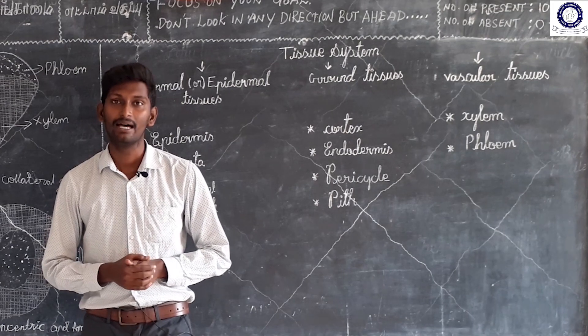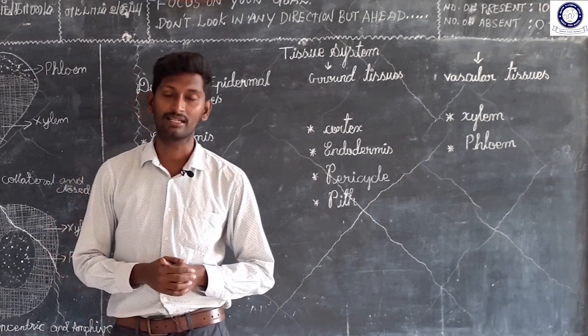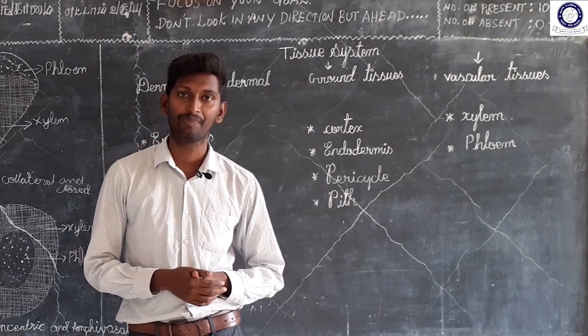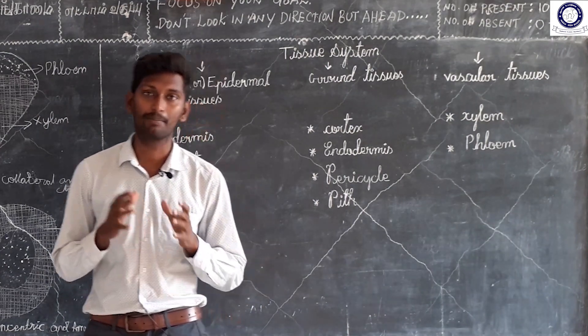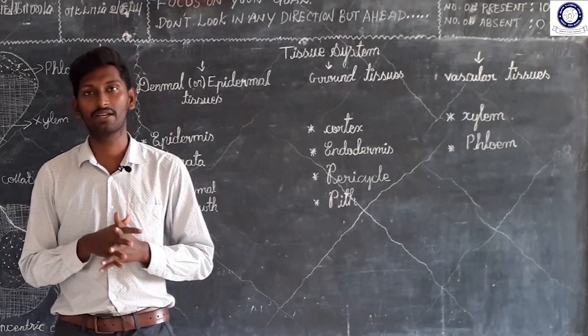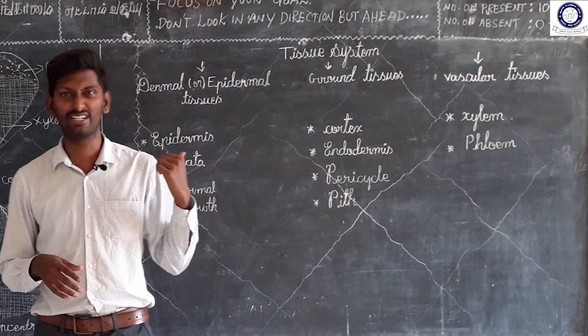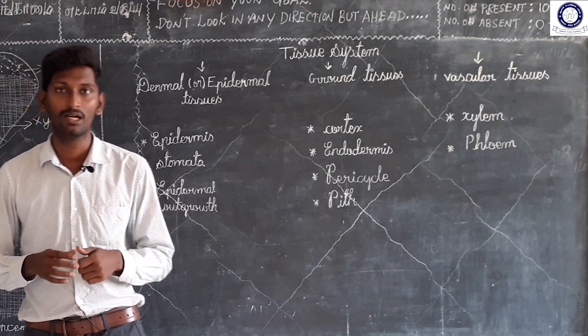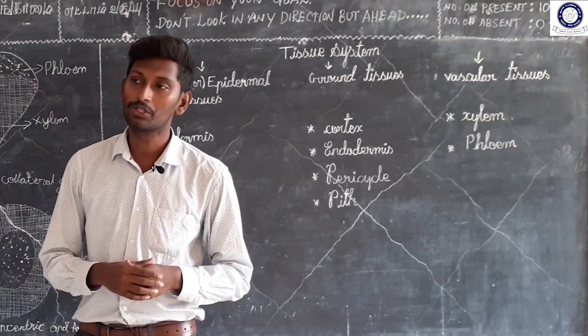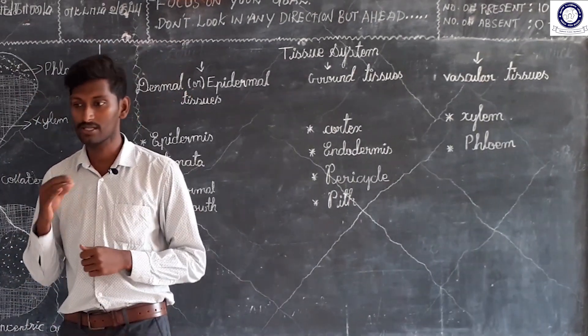Plant Physiology and Anatomy lesson. We will talk about the first thing in the primary system — the tissue system.